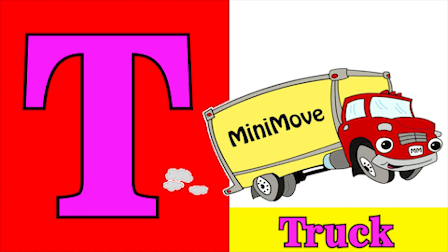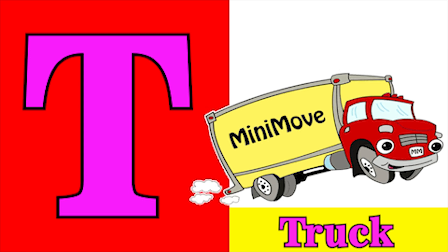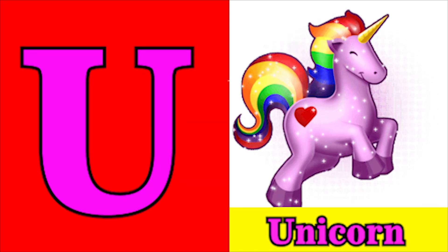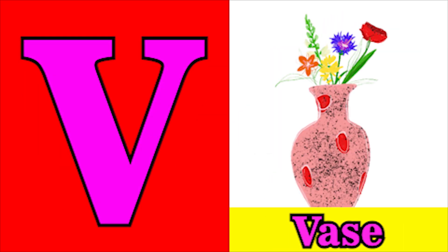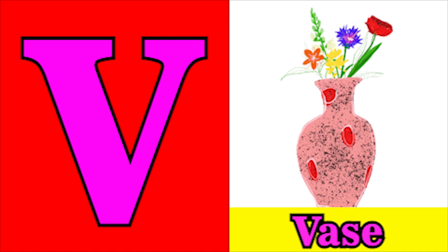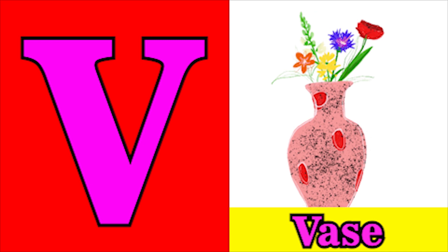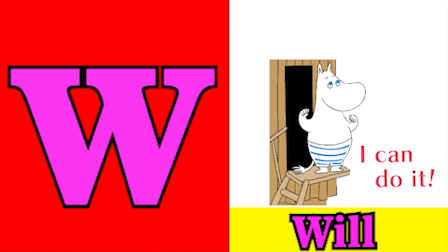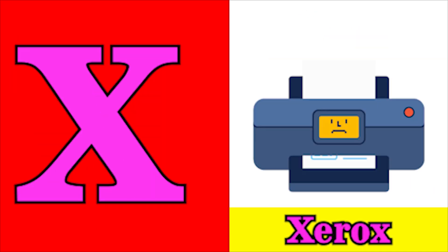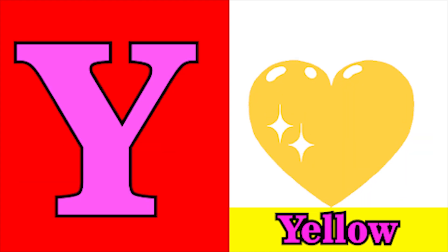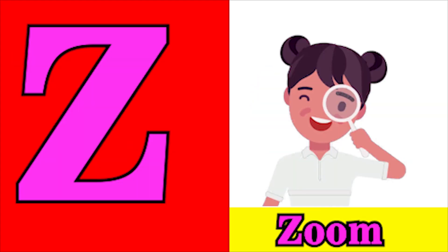T for tub, U for unicorn, V for vax, W for whale, X for x-rock, Y for yellow, Z for zoo.